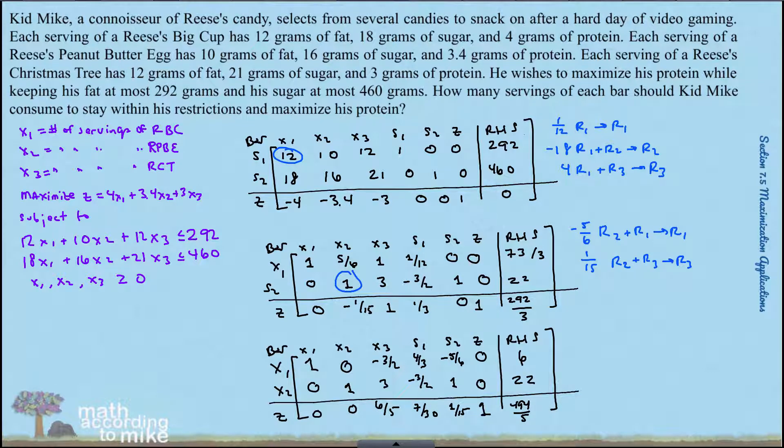The solution, and remember the answer here, six servings of a Reese's Big Cup. That makes sense. X2 equals 22 means he should consume 22 servings of the Reese's Peanut Butter Egg, or egg, however you want to pronounce that. Notice we have an X3 in our original problem, but X3 is not basic, which means X3 must be zero. So he should consume zero Reese's Christmas trees. So that's part of your interpretation.